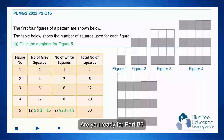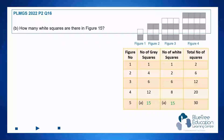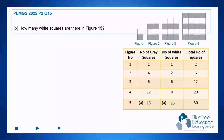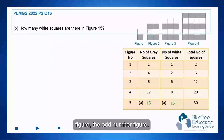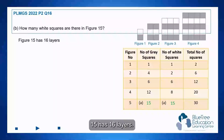Are you ready for part B? How many white squares are there in figure 15? In figure 15, it is actually an odd-numbered figure, so figure 15 has 16 layers.